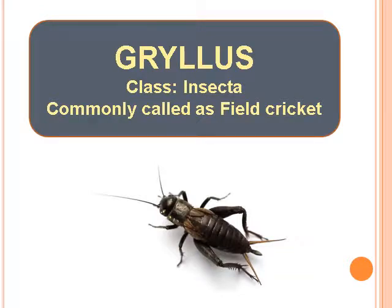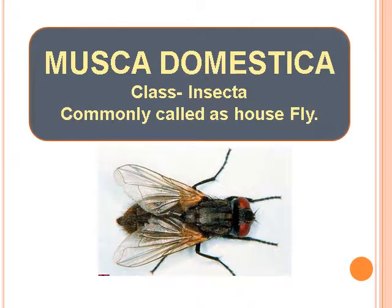Gryllus — Class Insecta, commonly called as Field Cricket. Musca Domestica — Class Insecta, commonly called as House Fly.